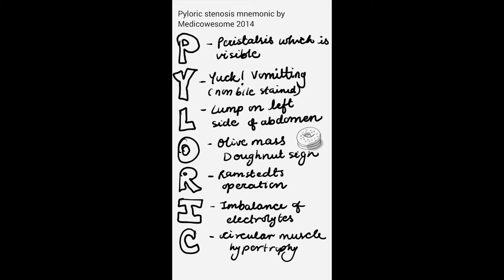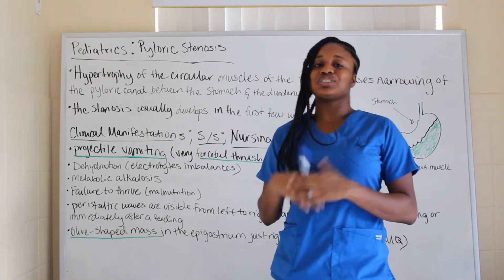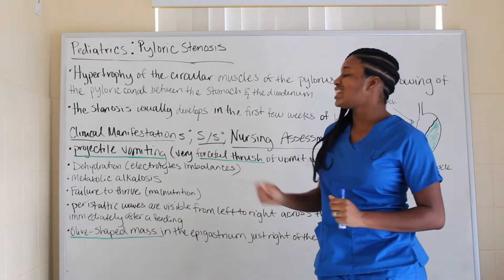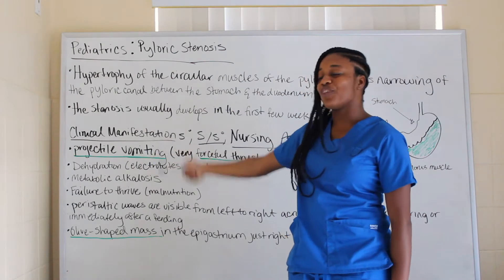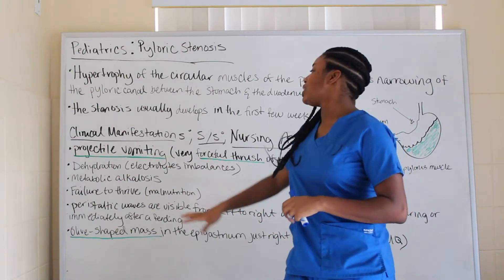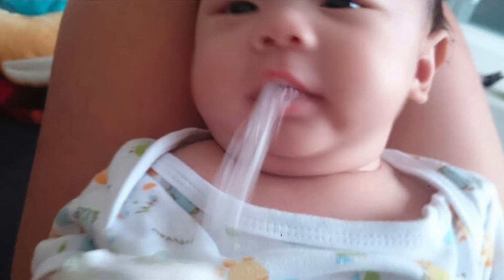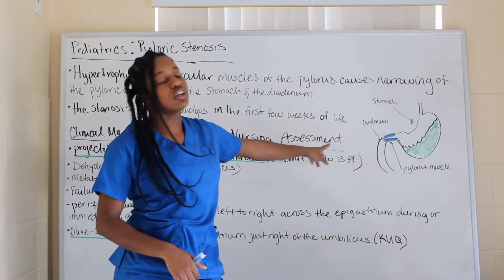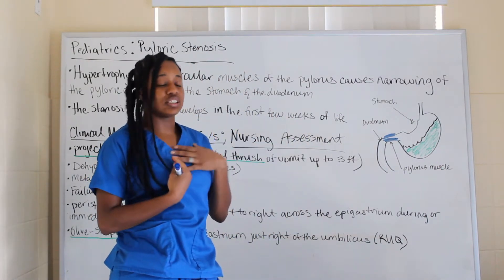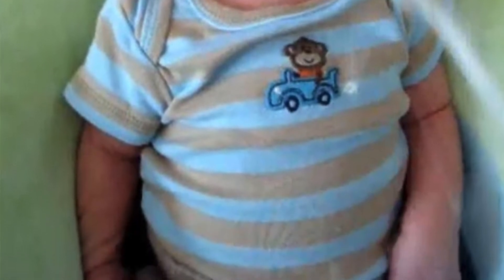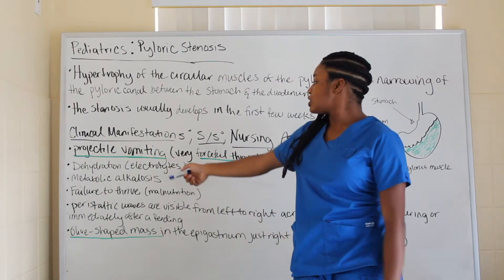Now for clinical manifestations — our signs and symptoms for nursing assessment. The main thing to know, which I've underlined in green, is projectile vomiting. It's a very forceful thrust that can go up to three feet. You'll just see the child start vomiting in such a forceful way that it projects that far.